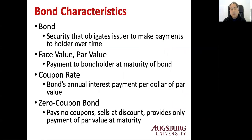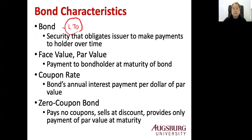So what is the bond? A bond is a debt security. Debt security means you borrow money, you issue the bond, and bondholders receive — they lend money actually to a company. So a bond is a contract of long-term debt. If you buy a bond, it means you lend money to the company and the company will pay you certain promised cash flows until the bond's maturity.